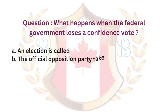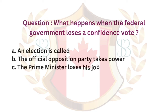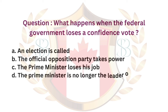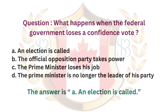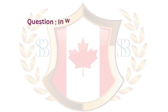Question. What happens when the federal government loses a confidence vote? a. An election is called. b. The official opposition party takes power. c. The prime minister loses his job. d. The prime minister is no longer the leader of his party. The answer is a. An election is called.